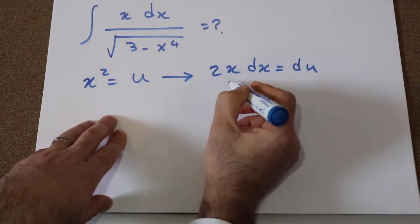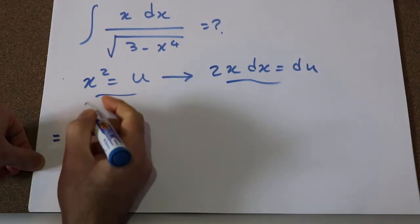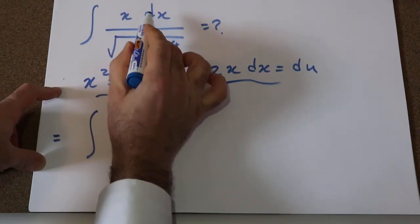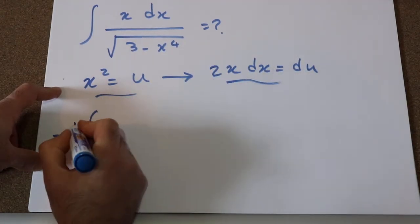Okay, so now let's substitute these two expressions into this integral. Therefore you can rewrite this integral as, instead of x dx – you see here I have x dx –